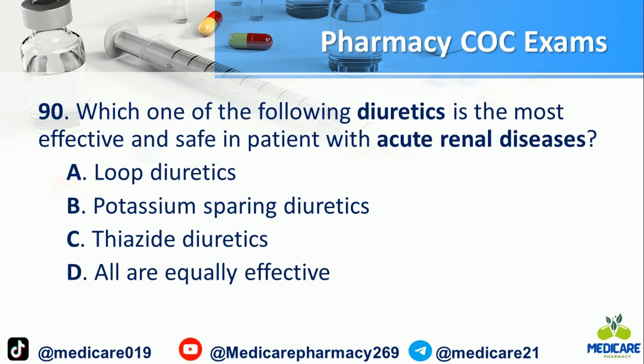Number 90: Which one of the following diuretics is the most effective and safe in patients with acute renal disease? a. Loop diuretics. b. Potassium-sparing diuretics. c. Thiazide diuretics. d. All are equally effective. The answer is A (Loop diuretics).